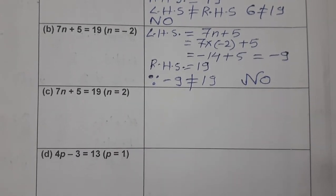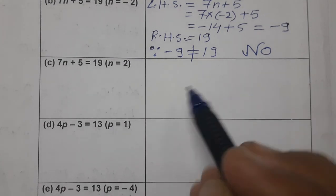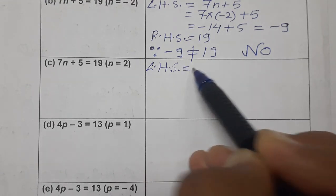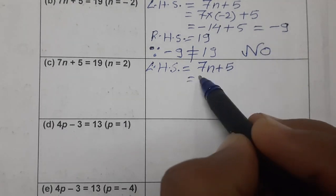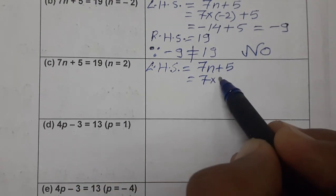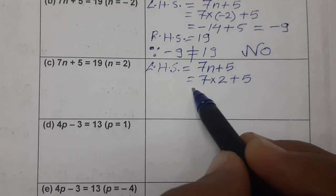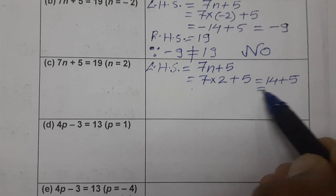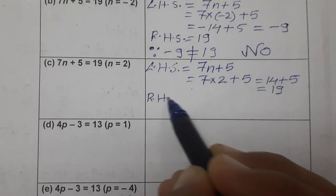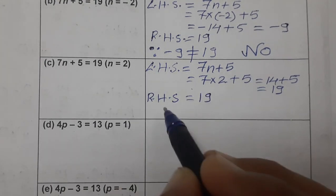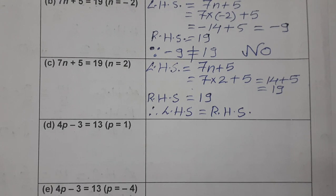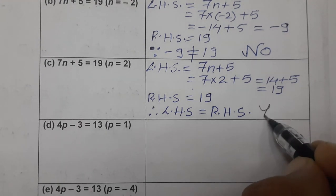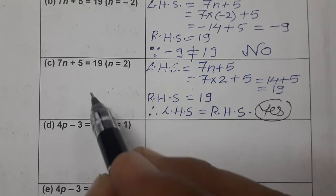Now the third part. Again, left hand side is 7n + 5. This time the value of n given to us is 2. Putting n = 2: 7 × 2 = 14, then 14 + 5 = 19. The RHS is also 19. Both are equal, so LHS equals RHS. Therefore, yes — n = 2 is the solution of the equation.